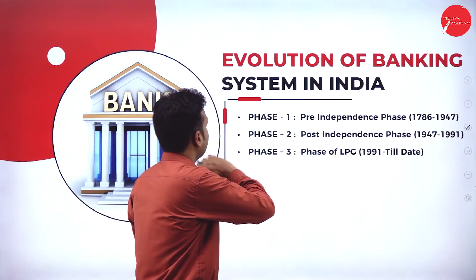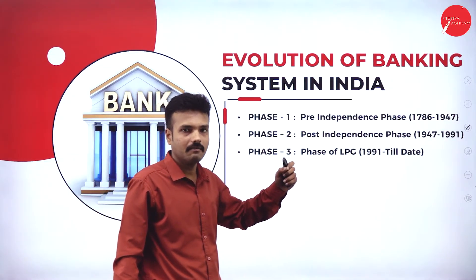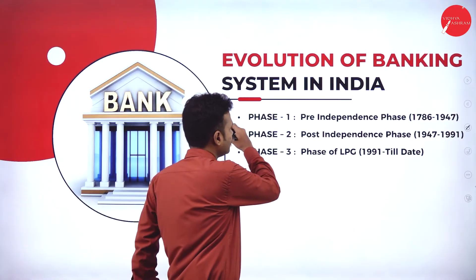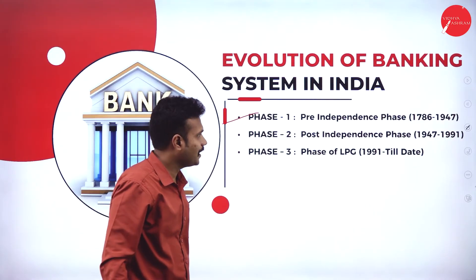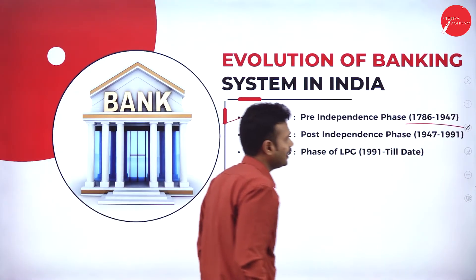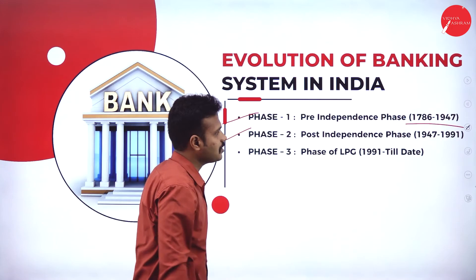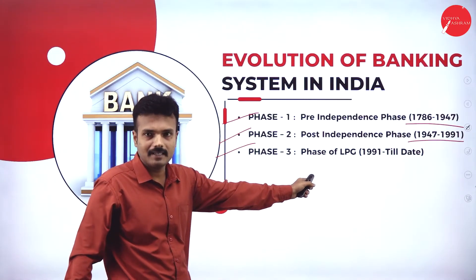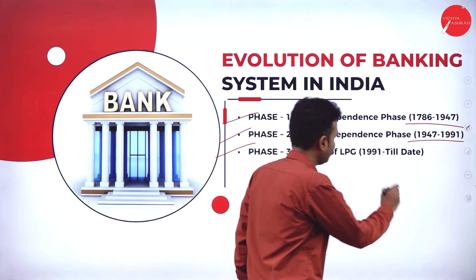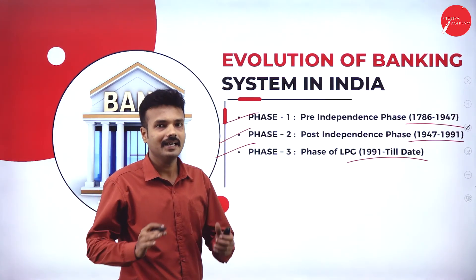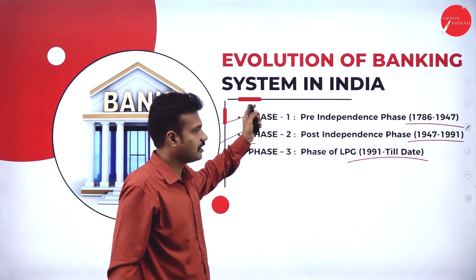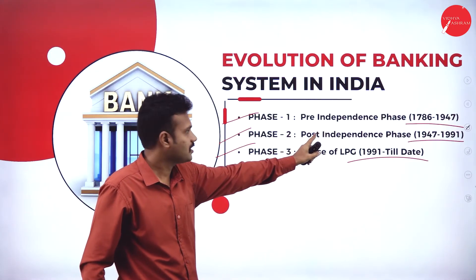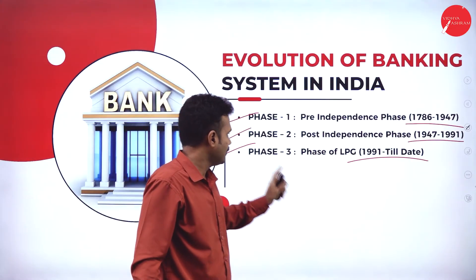In the evolution of the banking system in India, the system is divided into three categories: Phase 1 is the pre-independence era, from 1786 to 1947. Phase 2 is the post-independence phase, from 1947 to 1991. Phase 3 is the phase of liberalization, privatization, and globalization, which started from 1991 till today.